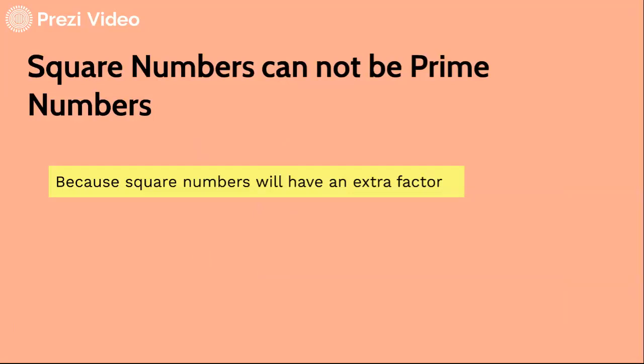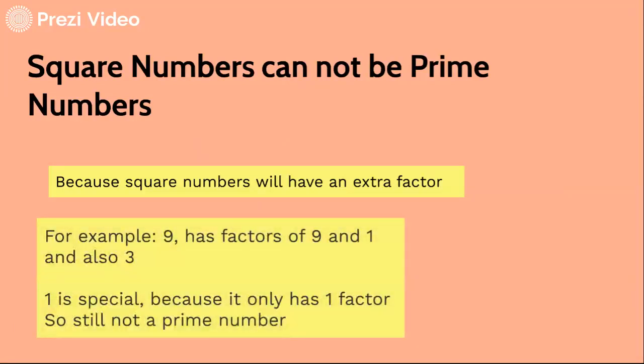Also, square numbers cannot be prime numbers because square numbers will have an extra factor. For example, 9, it has itself and 1, but also has the factor of 3.